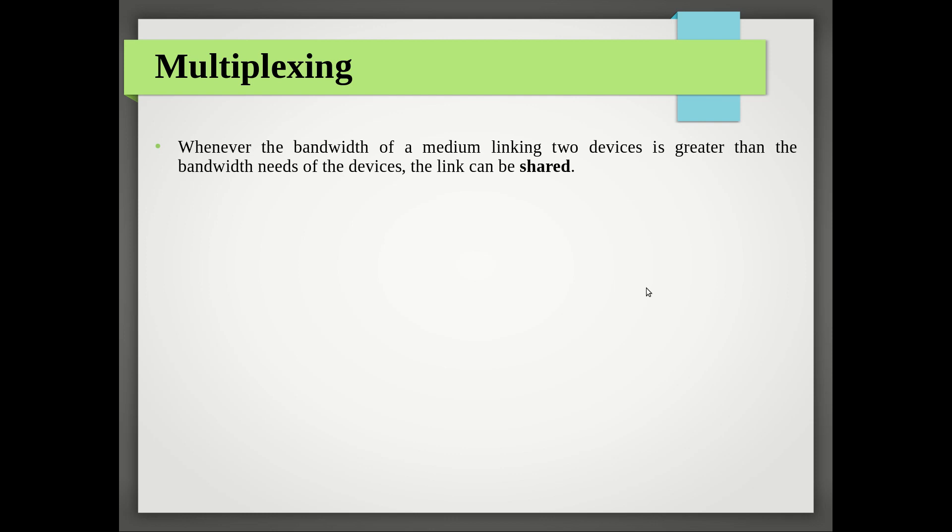If you are connecting a single device to the medium, that device may have a very low data rate requirement while the medium provides more bandwidth. In that situation, most of the bandwidth being allocated for communication will be wasted because that device is not generating data in a way that fully utilizes the medium's capacity. So instead of connecting a single device, you can connect more than one device so that everyone can share the bandwidth.